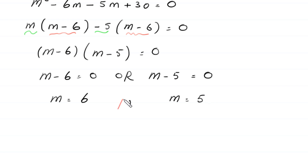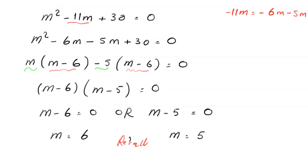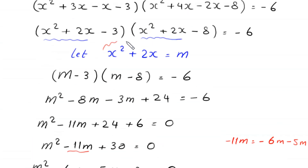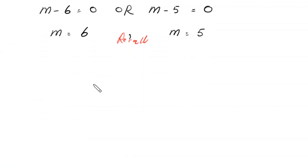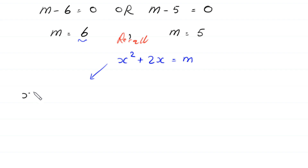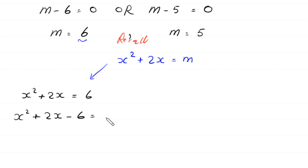Now, to find the values of x, recall that we supposed x squared plus 2x is equal to m. So when m is equal to 6, this equation becomes x squared plus 2x is equal to 6. Moving 6 to the left-hand side gives x squared plus 2x minus 6 is equal to 0. This quadratic equation is not factorable, so we solve it by the quadratic formula.